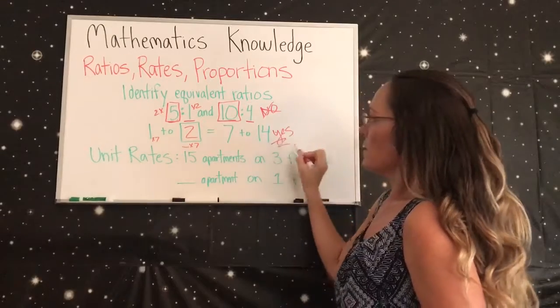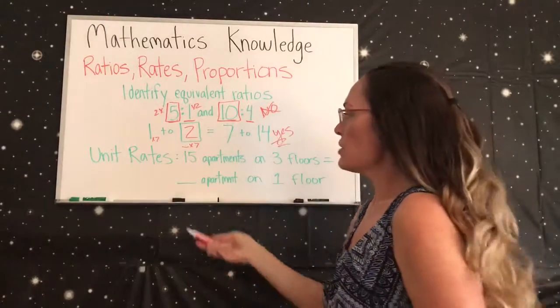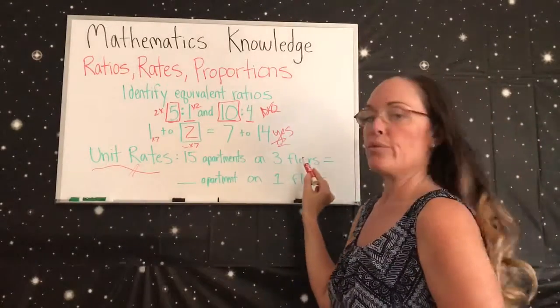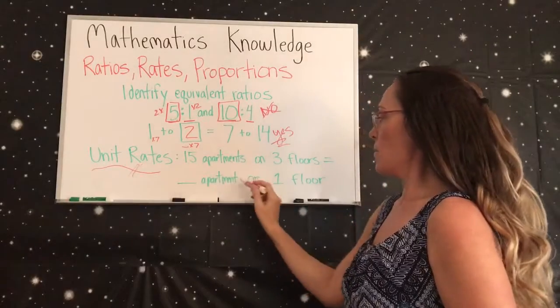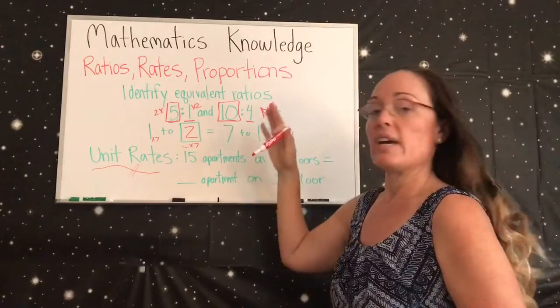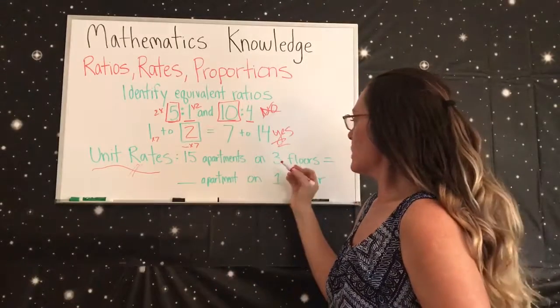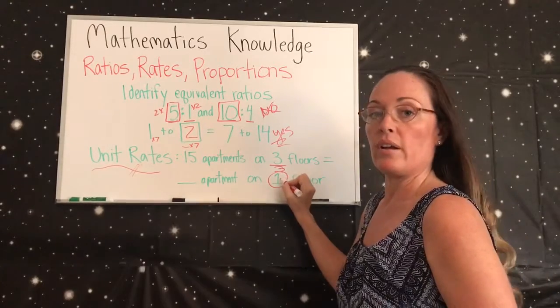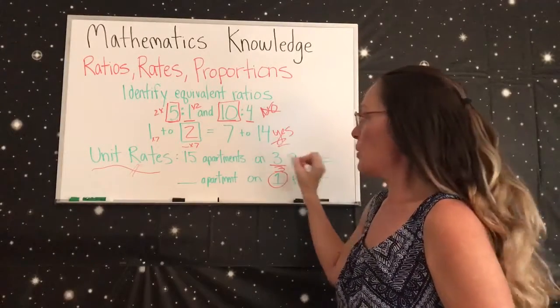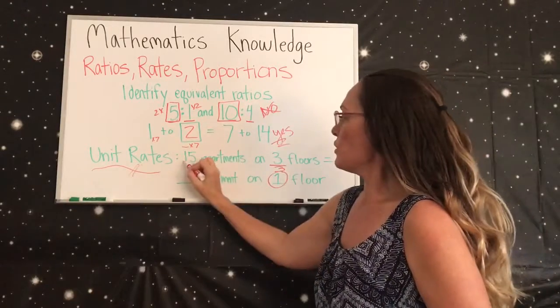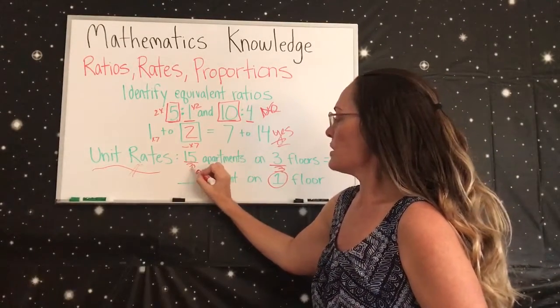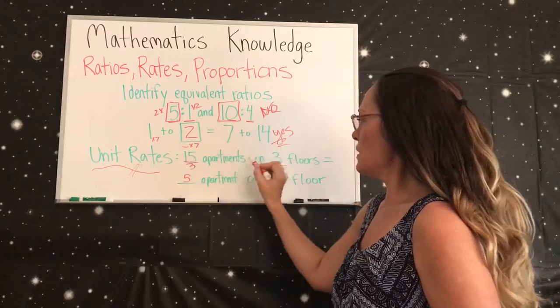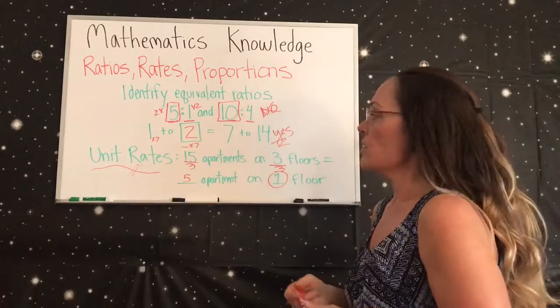Now we're talking about unit rates. 15 apartments on 3 floors is equal to blank apartments on one floor. So we have a bigger number and then we're going to go smaller, so let's divide. 3 divided by 3 does give you the 1, so whatever number you multiply or divide by, you have to do that to the other number. So we're going to do 15 divided by 3, so we're going to say 5 apartments on one floor is equal to the 15 apartments on three floors.